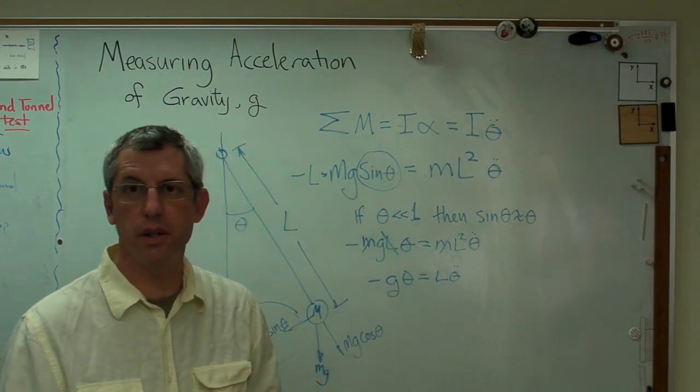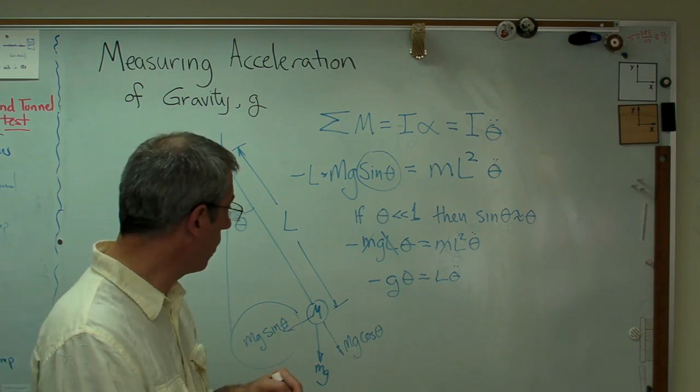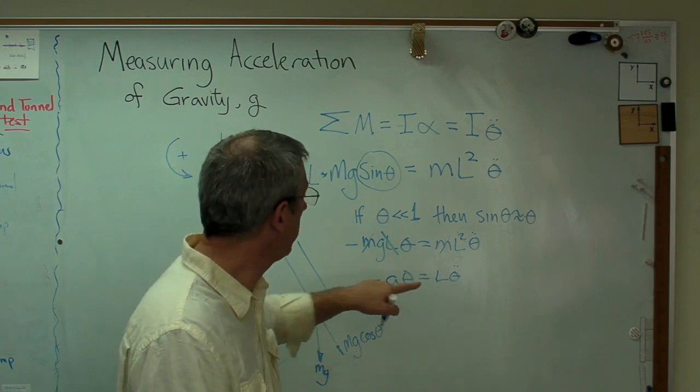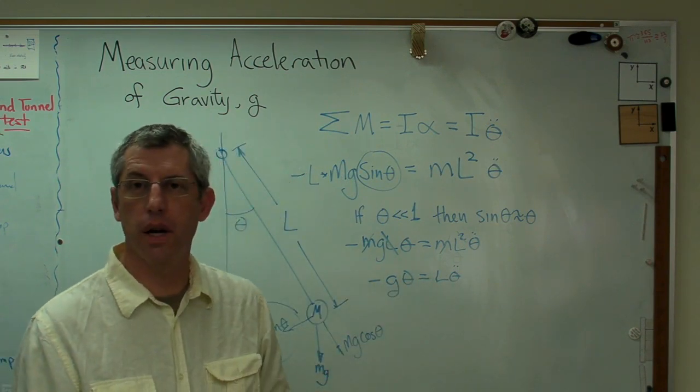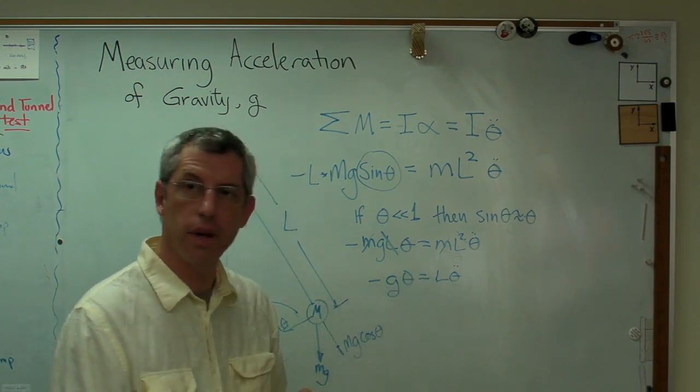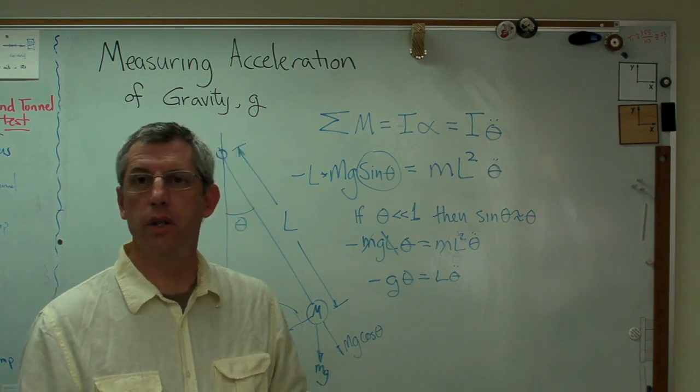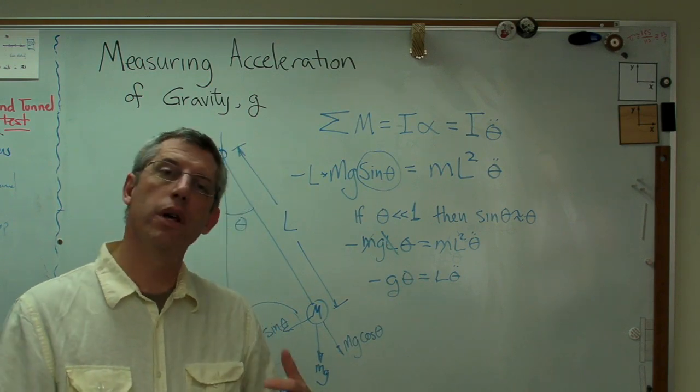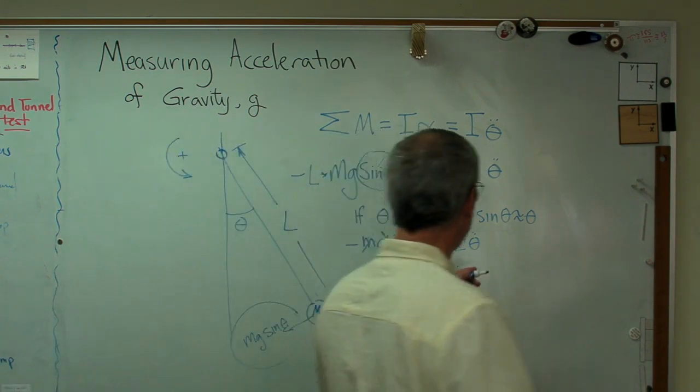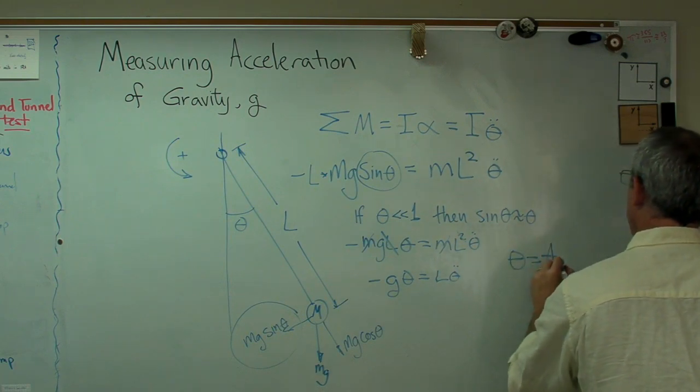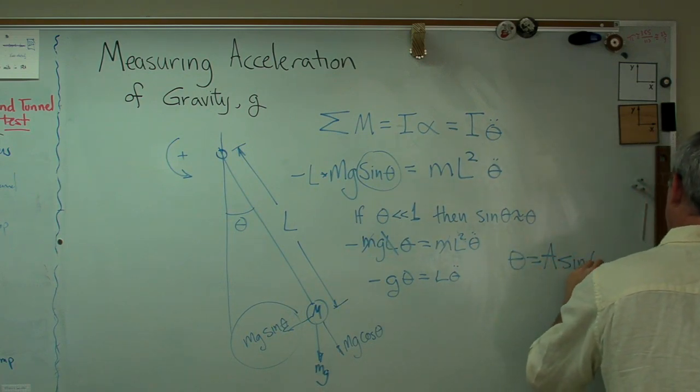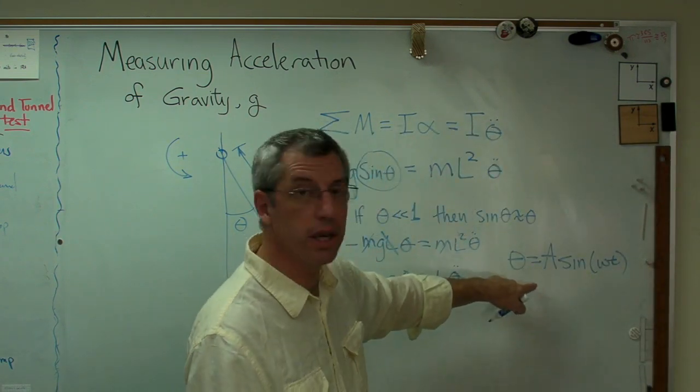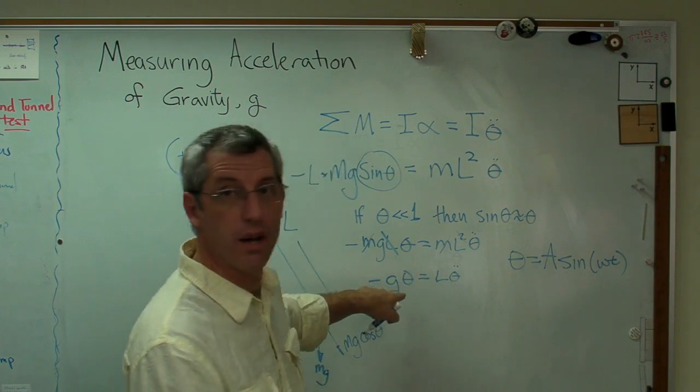There's one more thing we can do here. Because this has a double dot term there, second derivative, and then just a regular theta right there, we know from experience and from previous mathematical work that this is going to move sinusoidally. If we make that assumption, if we say that theta is some amplitude times sine omega T, that's what sinusoidal motion is, I already know that that's going to be the answer to that equation.